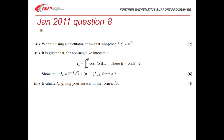Reading through what the question says: in part 1, without using a calculator, show that sinh of inverse cosh of 2 is equal to root 3. In part 2, we're given that for non-negative integers, I(n) is equal to the integral from 0 to beta of cosh to the power of n of x, where beta equals inverse cosh of 2, and we've got to show the recurrence relation. In part 3, we've got to evaluate I5 — the integral of cosh to the power of 5 — giving our answer in the form k root 3.